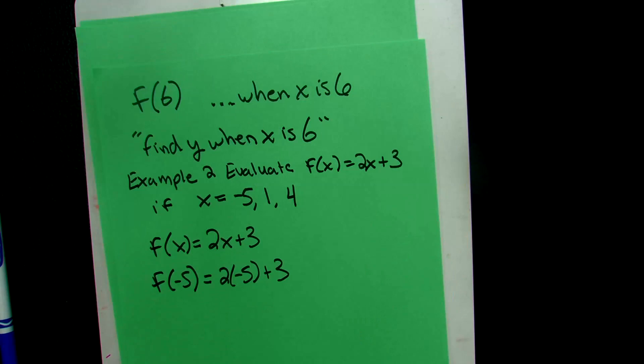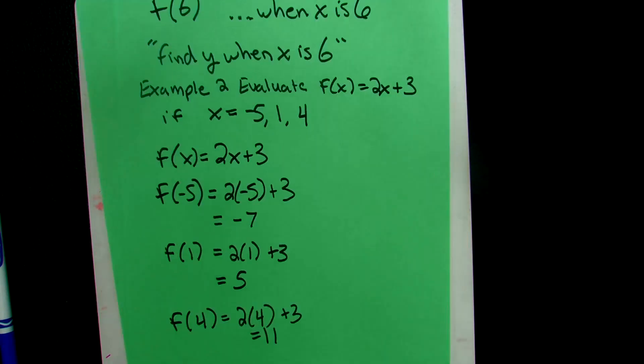So now let's do 1, F of 1. So we end up with 5. And then F of 4. So we end up with 11.